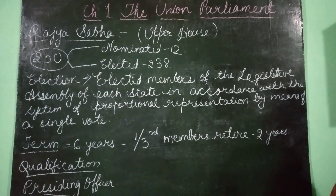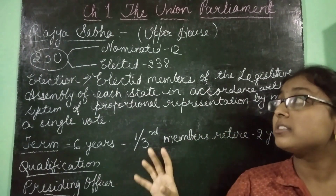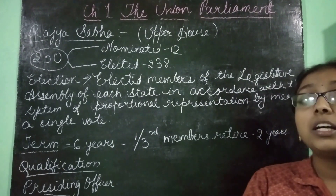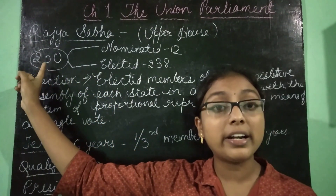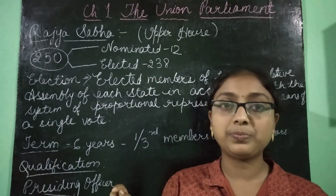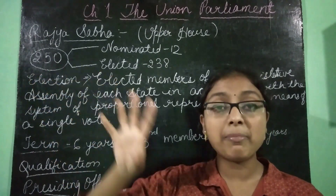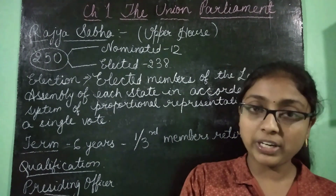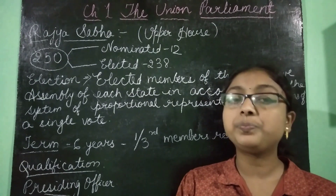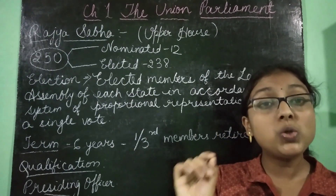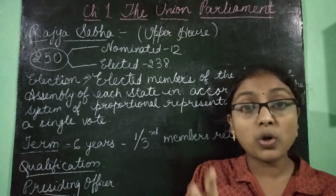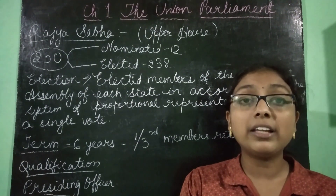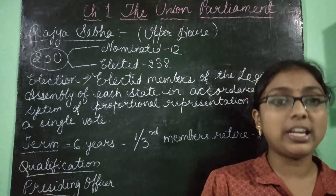If we talk about the total strength of Rajya Sabha, it is 250. From these 250, the members are divided into two categories: some are nominated and some are elected. There are 12 nominated members, and these members are nominated by the President of India.